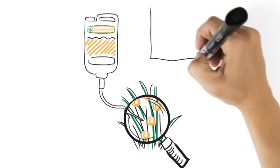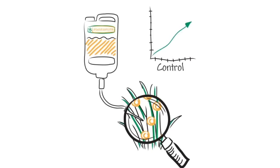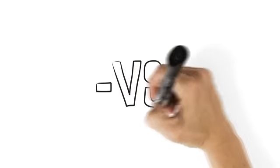Foliar feeding bypasses my root system, which means greater control of nutrient delivery. But to maximize control and value for Max's dollar,